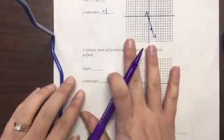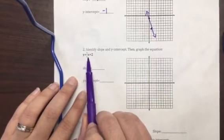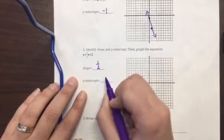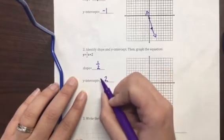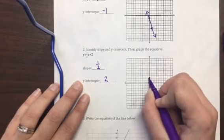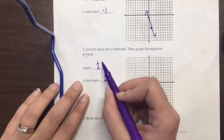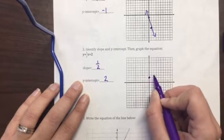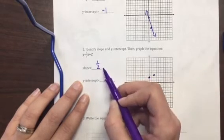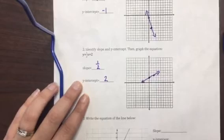Alright, number 2, we're doing the same thing. We're identifying the slope and y-intercept and then graphing the equation. So my slope is 1 half, my y-intercept is 2 or positive 2. So I'm going to start with my y-intercept and put a point at positive 2. Then I'm going to use my slope to count to find my second point. It's rise over run, so I'm going to rise 1 and run 2. I went up 1 and to the right 2 because both 1 and 2 in my slope are positive. I connect the dots and create a line.